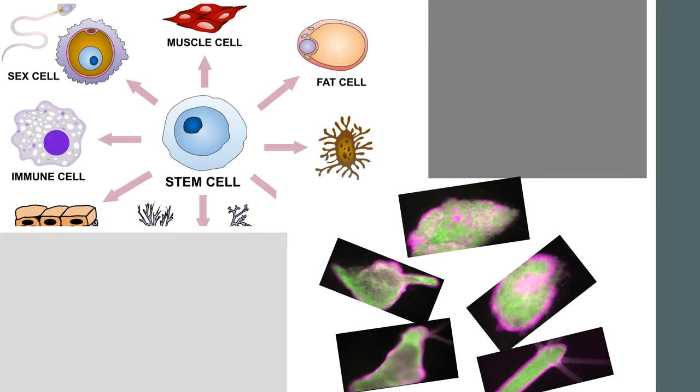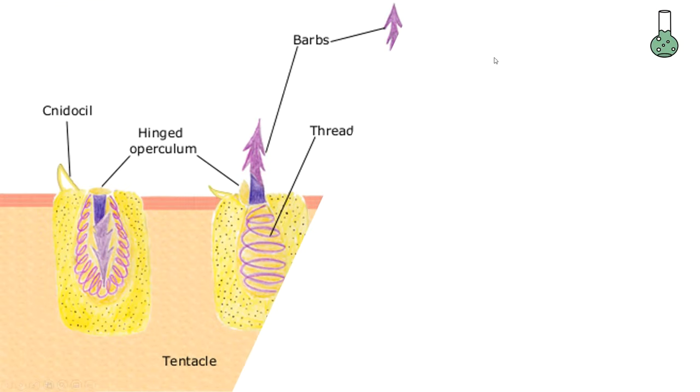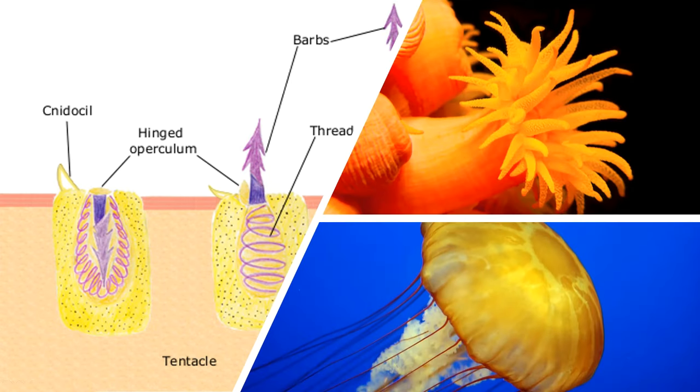Next, in the tentacles they have the stinging cells. The stinging cells, or nematocysts, are like little harpoons that can fire away. They have poison on them. As you can see here, jellyfish and sea anemones also have these because they are in the same family with hydra.